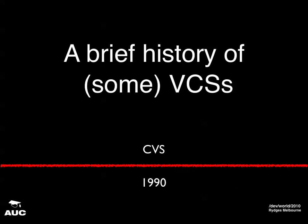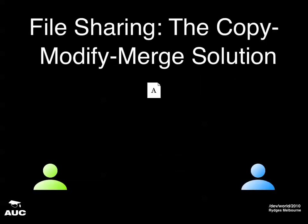Next we come to CVS, which came out originally in 1990. It stands for the Concurrent Version System, or possibly Concurrent Versioning System. It's free under the GNU GPL, and it was originally built on top of RCS, but now it's completely independent. Next up is a big favorite: Subversion, which came out in 2000. Development was initially sponsored by a company called CollabNet, but it's open source under the Apache license, so it's free software. CVS and Subversion use what's called the copy-modify-merge solution to the file sharing problem.